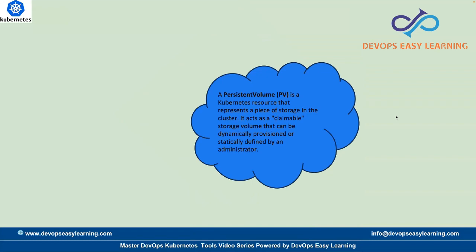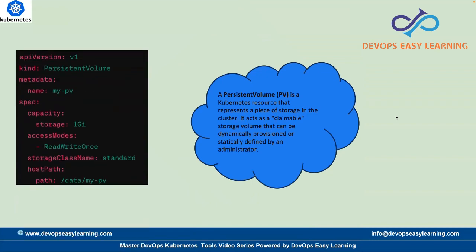A persistent volume is a volume that the administrator claims from the storage class, and that volume will be used for stateful applications. A stateful application is an application that requires storage — one that stores customer data. If you have stateful applications running in a Kubernetes cluster, you will require persistent volumes. All databases like Postgres, Redis, and similar tools will always have a persistent volume.